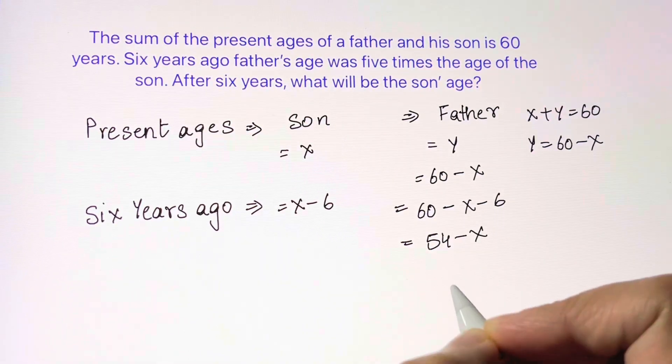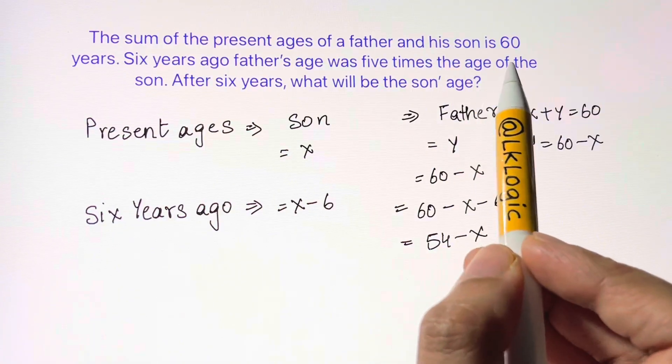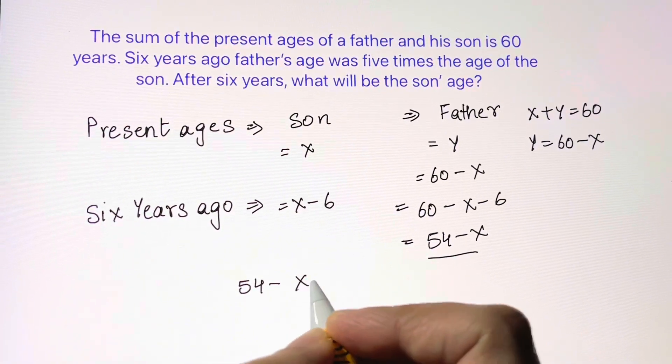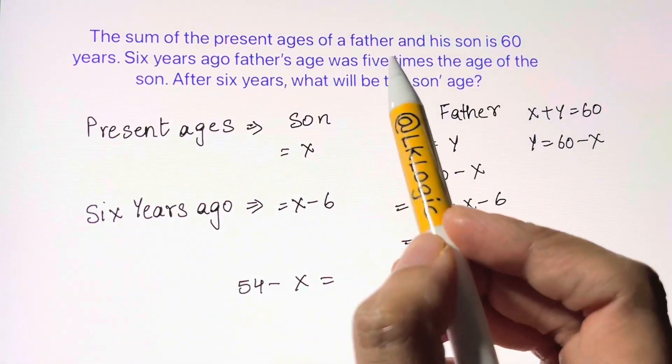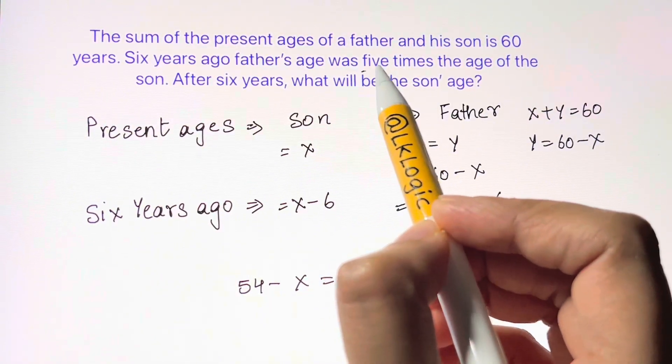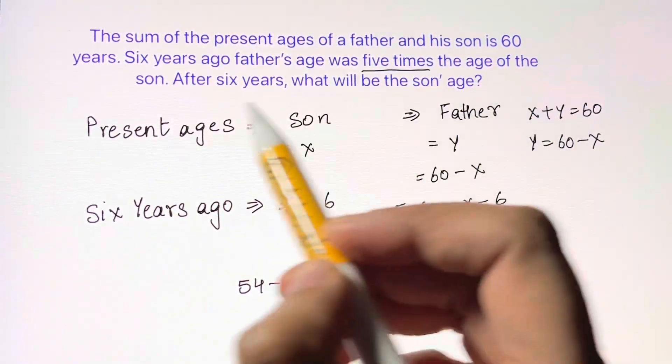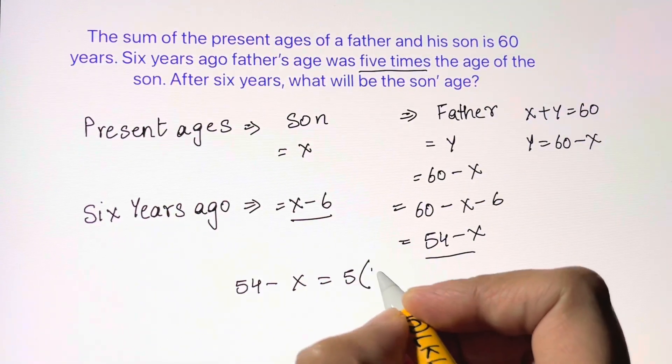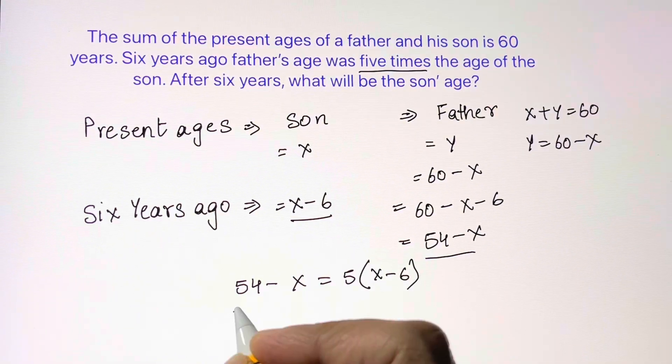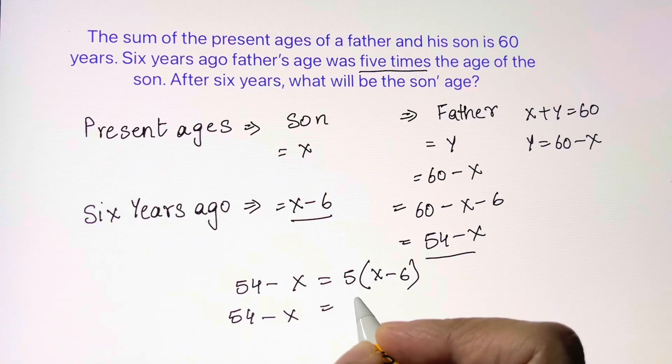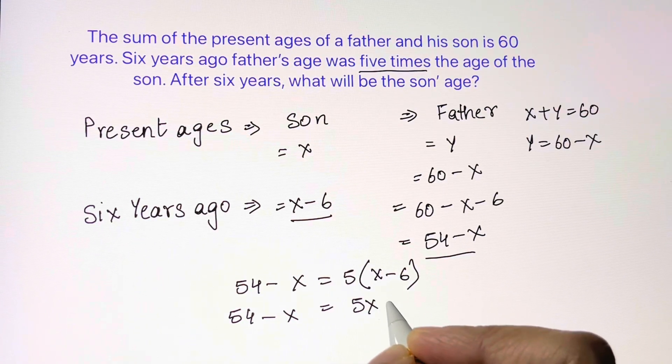It's given that six years ago, father's age was five times the age of the son. So we write it as an equation: 54 - x is the father's age, which was five times the son's age. The son's age six years ago was x - 6. So we form the equation: 54 - x = 5(x - 6), which simplifies to 54 - x = 5x - 30.